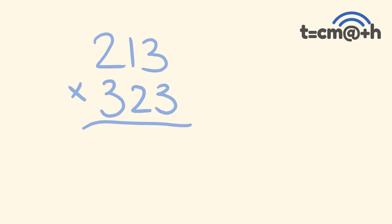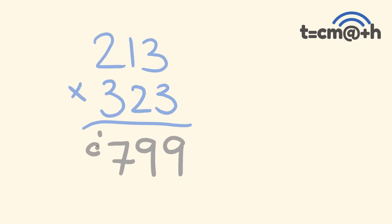Alright, so we have 3 times 3 is 9. We have 3 plus 6 is 9. We have 6 plus 2 plus 9 is 17 — put the 7 there and carry the 1. We have 4 plus 3 is 7, plus that 1 is 8. And 3 times 2 is 6. Did you get the answer of 68,799? And more importantly, did you do it faster than me?